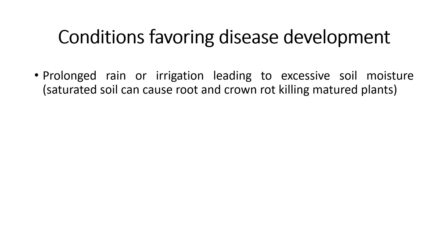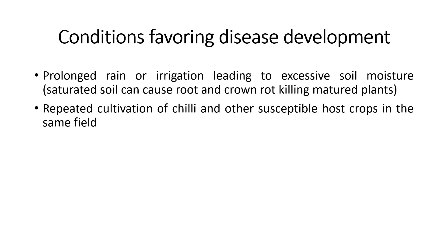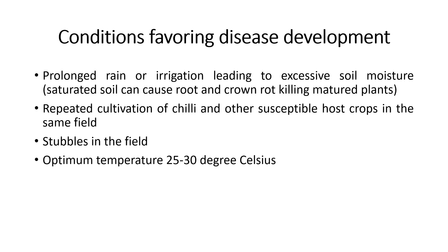Conditions favoring disease development include prolonged rain or irrigation leading to excessive soil moisture. When the soil is saturated, it can cause root and crown rot, killing mature plants. Repeated cultivation of chile and other susceptible host crops in the same field can also create favorable conditions for the pathogen, whereby they do not have to rely on mating to survive. Stubble from previous crops can also create favorable conditions. Optimum temperature ranges between 25 to 30 degrees Celsius.